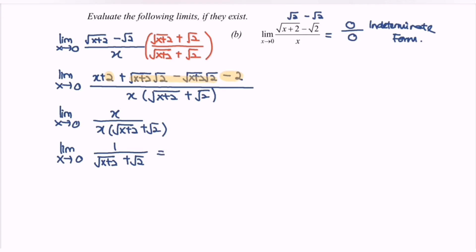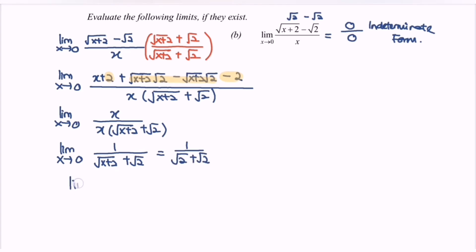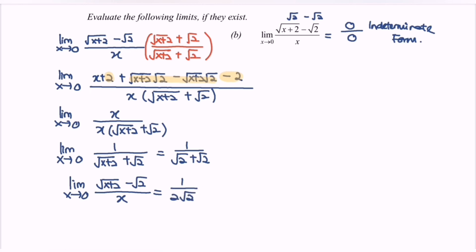Finally, for the limit when x approaches 0 of (square root of (x plus 2) minus square root of 2) over x, the answer is 1 over 2 square root of 2. So here we are, and thanks for watching.